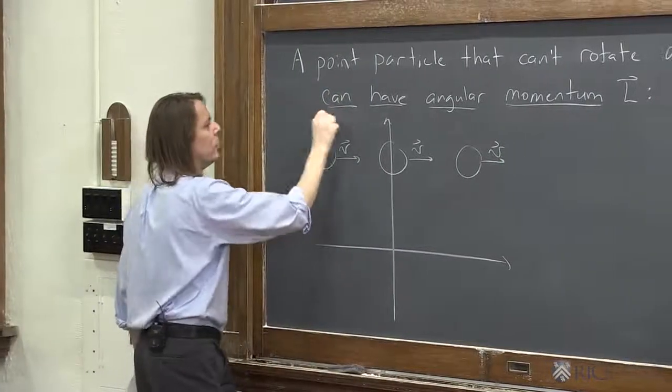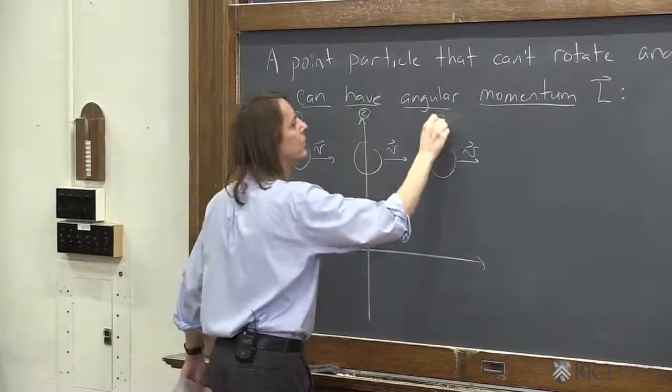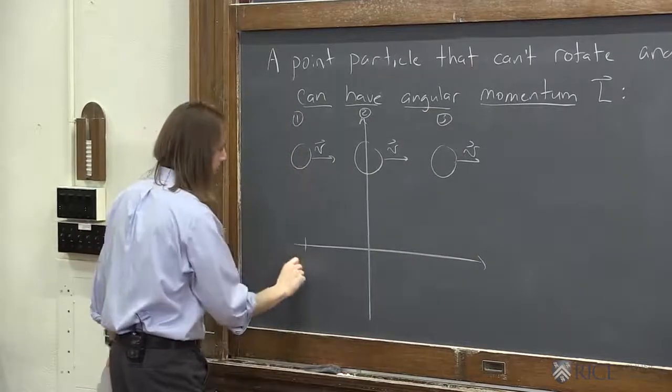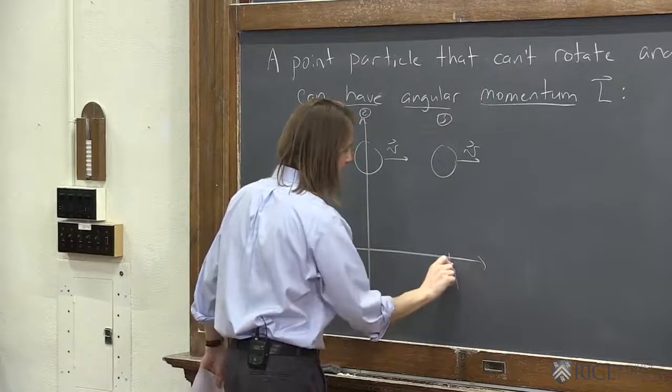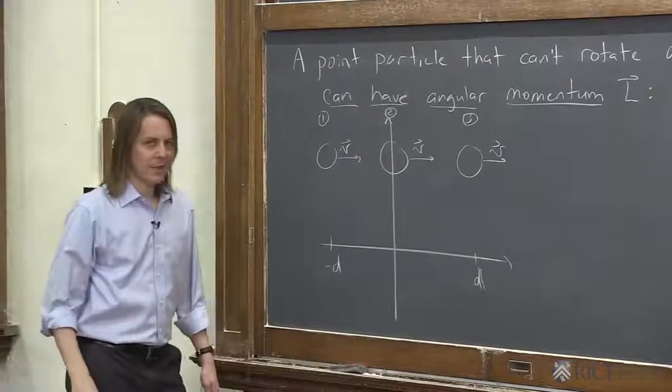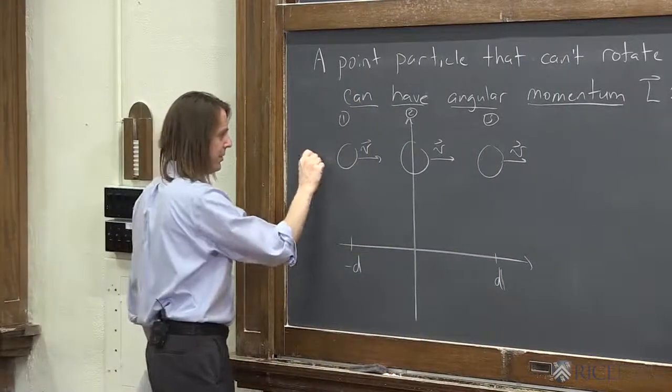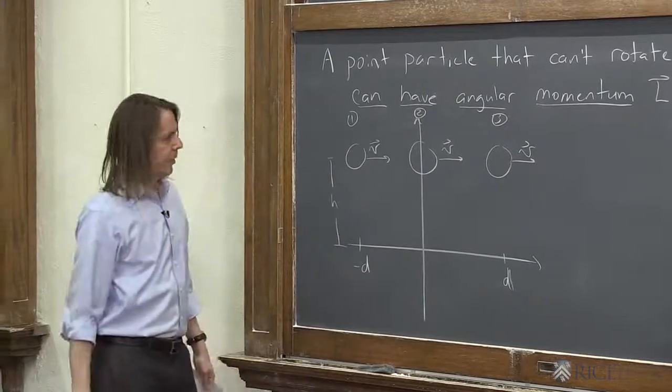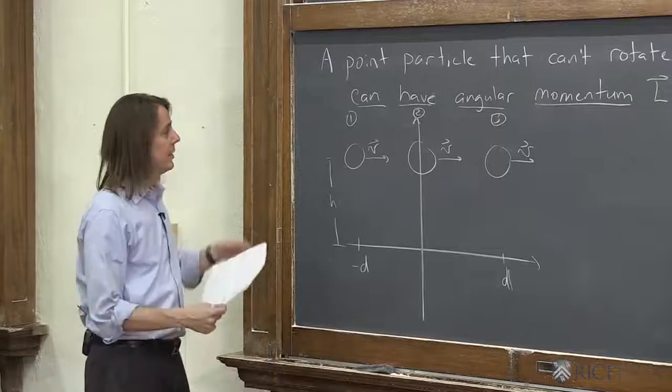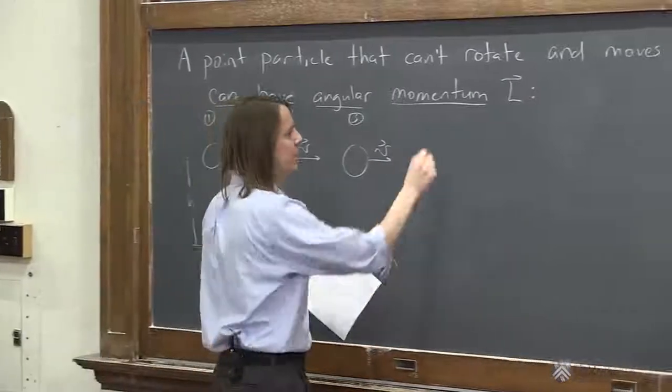We'll call this position one, this position two, this position three. And the positions one and three are at minus D and D on this axis, could be the x-axis. And the height above the origin, we'll call H. All right, so what we're going to do is calculate the angular momentum at each position, see what we get.